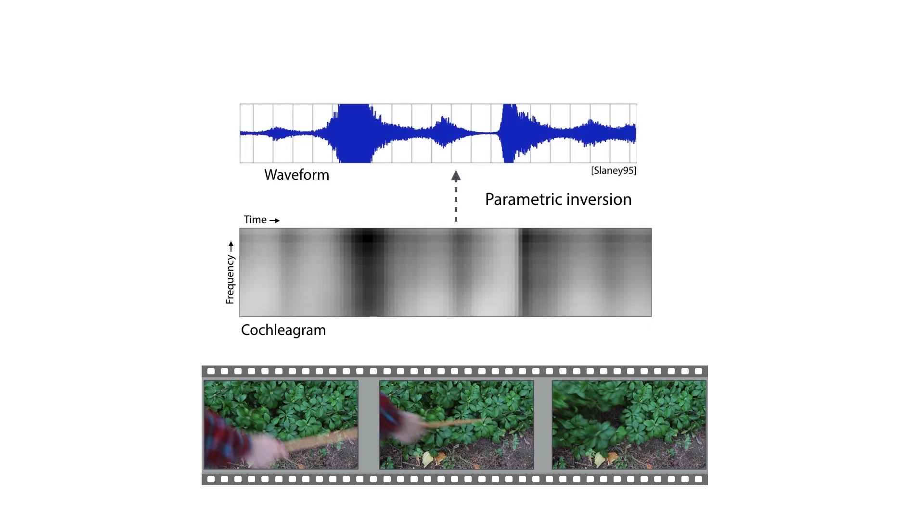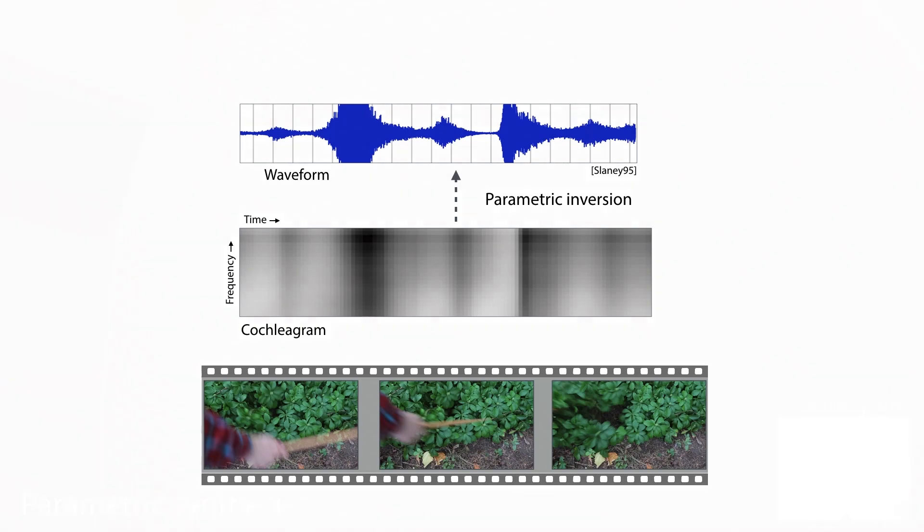Instead of synthesizing a waveform by transferring sounds from a database, we can directly invert the sound features with a simple parametric synthesis method. This can help us understand what information is contained in the sound features that our model predicted.